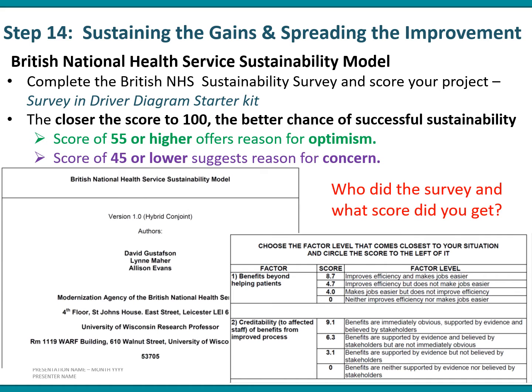Another really good tool to use is called the British National Health Service Sustainability Model. I would read this and actually do the survey — it will give you an indication about the chance of successful sustainability of your project very early on. If you do the survey and add the scores up, if you get 55 or higher, it means you can be quite optimistic about sustainability. If you get 45 or lower, this suggests reasons for concern.